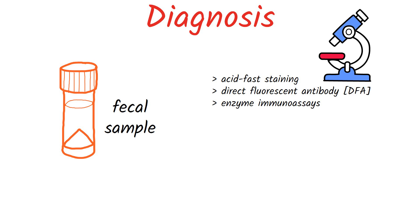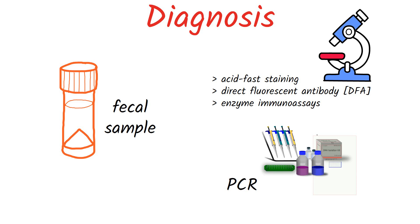There are some molecular methods like polymerase chain reaction, also called PCR, that are increasingly used in reference diagnostic labs, since they can be used to identify cryptosporidium at the species level. The tests for cryptosporidium are not routinely done in most laboratories; therefore, healthcare providers should specifically request testing for this parasite.